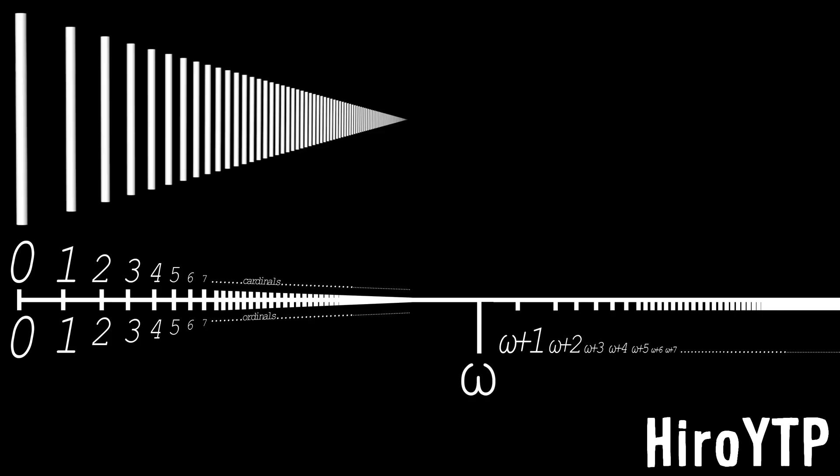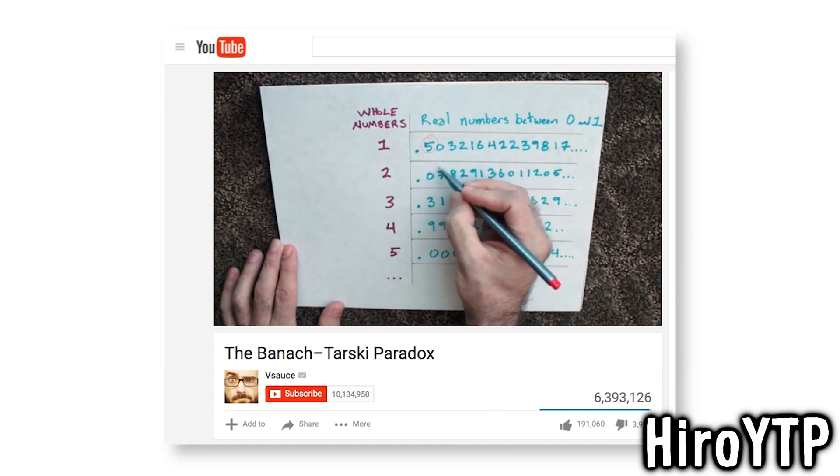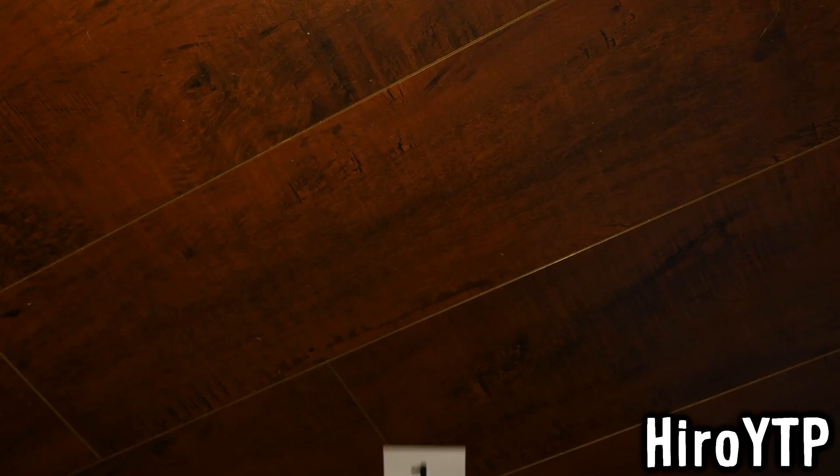Omega plus 1, omega plus 1 — omega, aleph null, aleph null — the power set of aleph null.